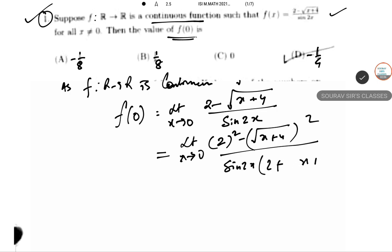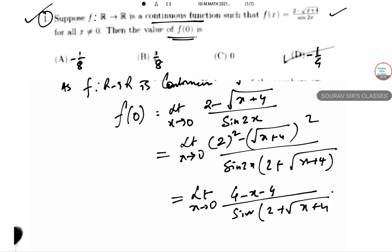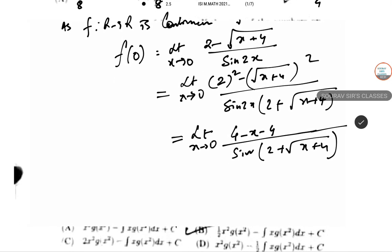After rationalization, we get 2 squared minus root over (x+4) squared, divided by sine 2x times (2 plus root over (x+4)). As x tends to 0, the numerator becomes 4 minus x minus 4, which simplifies. This gives us minus 2x in the numerator.